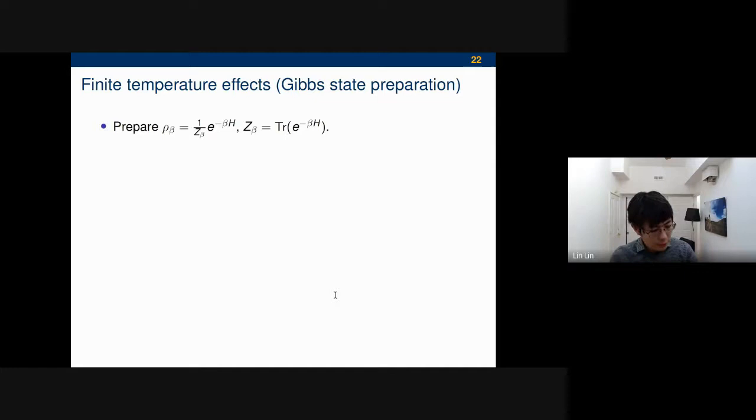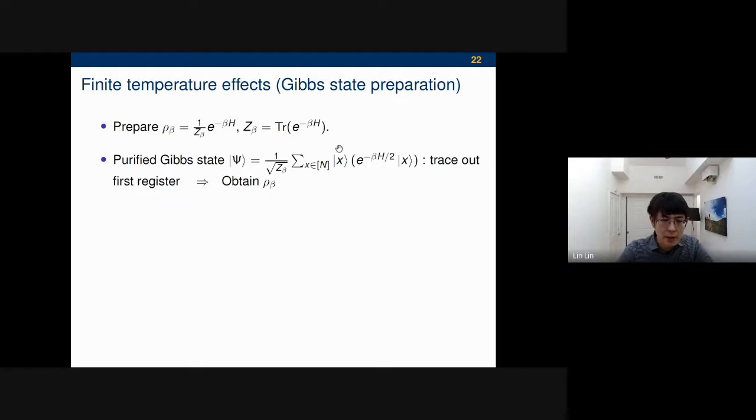In the final few minutes, let me talk about, you can also use similar precondition techniques to deal with finite temperature effects such as Gibbs state preparation. The idea is you want to prepare a thermal state rho_beta, that is this exponential beta H, and Z_beta is the normalization factor. The idea that's often used in the literature is you consider this purified Gibbs state, which is a pure state. If you trace out the first register, you obtain the mixed state, which is exactly rho_beta. What you want is to apply this operator to some initial state, for example, the maximally mixed state, so that you can trace out the first register and get this rho.